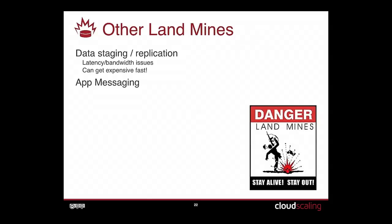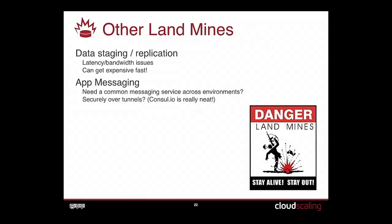App messaging: queuing systems like SQS or RabbitMQ — if you need a common one across environments, lean in early and go towards well-known, well-understood, open-source, lowest common denominator tools like RabbitMQ or ZeroMQ. Messaging will have to be a tool that can spread across multiple environments. And can you do it securely? If you haven't checked out console.io yet, you should — it's fascinating where the world's going.